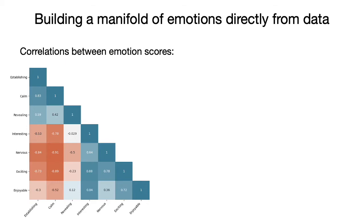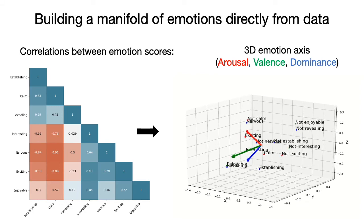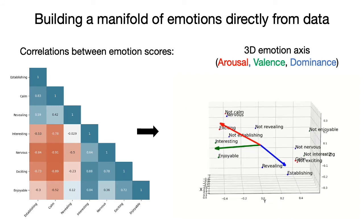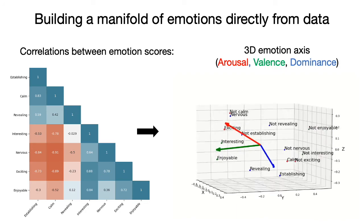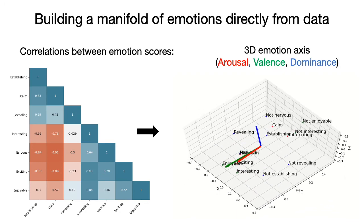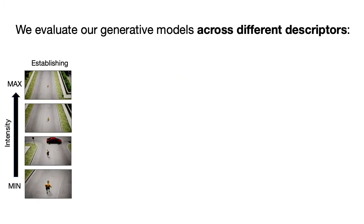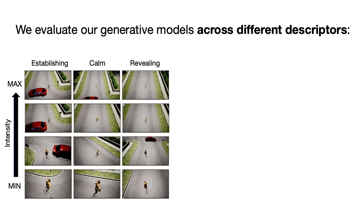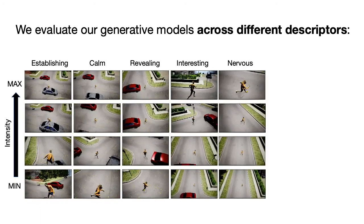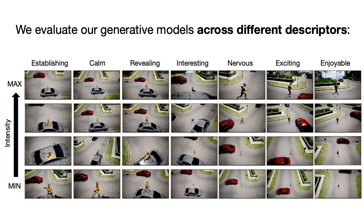By evaluating the correlations between descriptors, we can create a 3D emotional feature space based on psychology literature, where we have three main axes of arousal, valence, and dominance emotions. Using this data, we are able to learn a generative model that finds the most suitable shot parameters for a given emotional expression. We show videos displaying shots generated for different intensities for each one of the emotions we consider in this work.